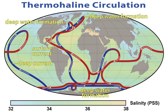Oceanic heat content refers to the heat stored in the ocean. Changes in the ocean heat play an important role in sea level rise because of thermal expansion. Ocean warming accounts for 90% of the energy accumulation from global warming between 1971 and 2010.